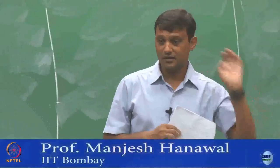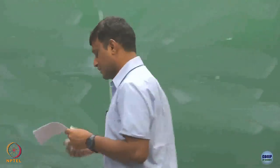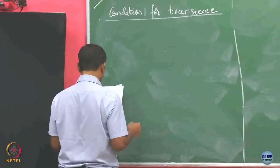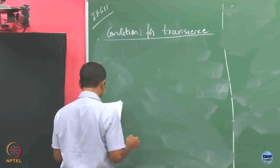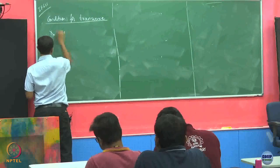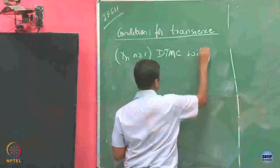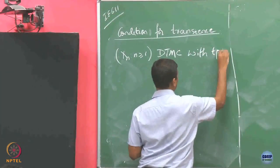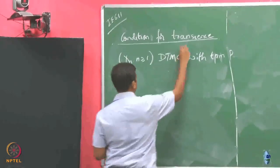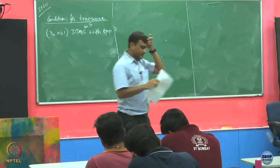For this we again need to build some conditions to check, and for that we need to build some notations. Let us take Xn to be a DTMC with transition probability matrix P, my DTMC on state space S with transition probability matrix P given to you.